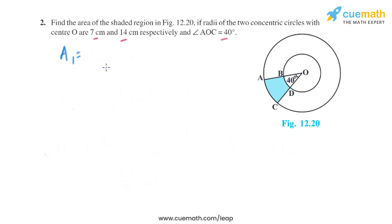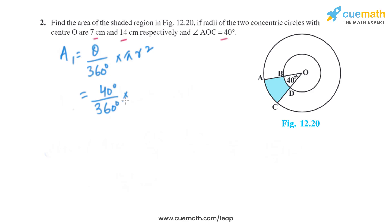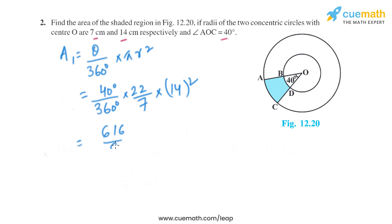Let A1 be the area of the bigger sector. The formula to find the area of a sector is theta divided by 360 degrees multiplied by pi R squared. So that is 40 degrees divided by 360 degrees, multiplied by 22/7, and the radius of the bigger sector is 14 centimeters. Solving this, we get the area of the bigger sector as 616 divided by 9 square centimeters.